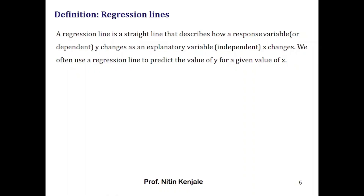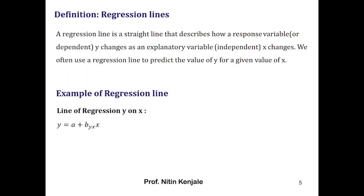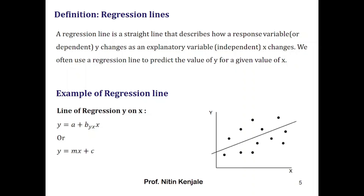Now let us talk about regression lines. A regression line is a straight line that describes how a response variable or dependent variable y changes as an explanatory variable, that is independent variable x, changes. We often use a regression line to predict the value of y for a given value of x. The regression line of y on x is given by y equals a plus byx times x, or simply y equals mx plus c. Look at this diagram — the coordinates of the dots represent x and y values, and the straight line passing through these dots is the regression line.